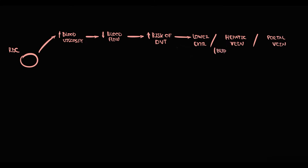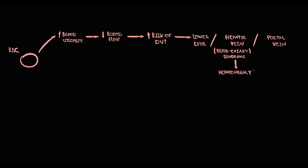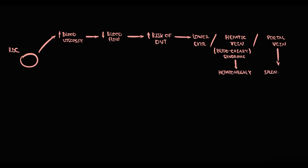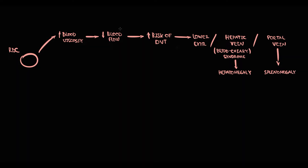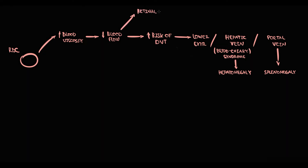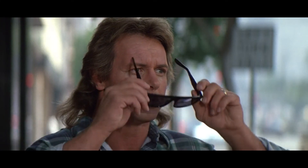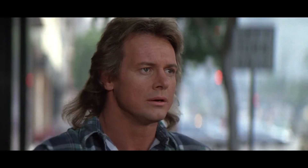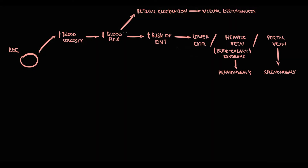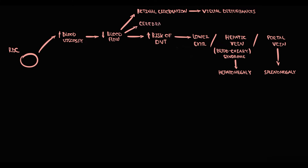Thrombosis of the hepatic vein, also called Budd-Chiari syndrome, can with time cause hepatomegaly. Thrombosis of the portal vein with time can cause splenomegaly. The most sensitive system to any alterations in blood flow is the nervous system. Decreased blood flow in retinal circulation can cause visual disturbances, and decreasing blood flow in cerebral circulation can cause symptoms such as headache or lightheadedness.